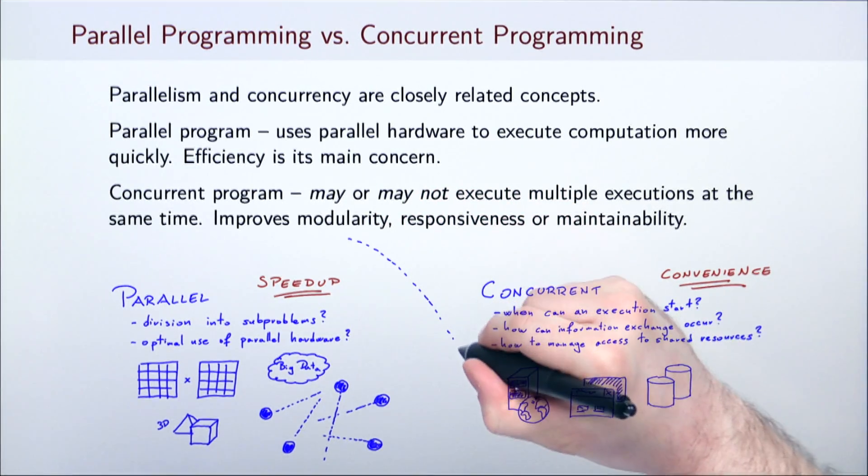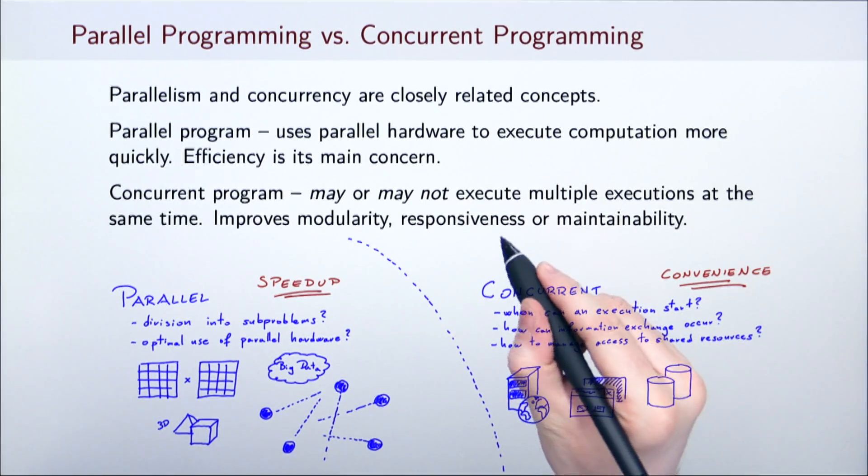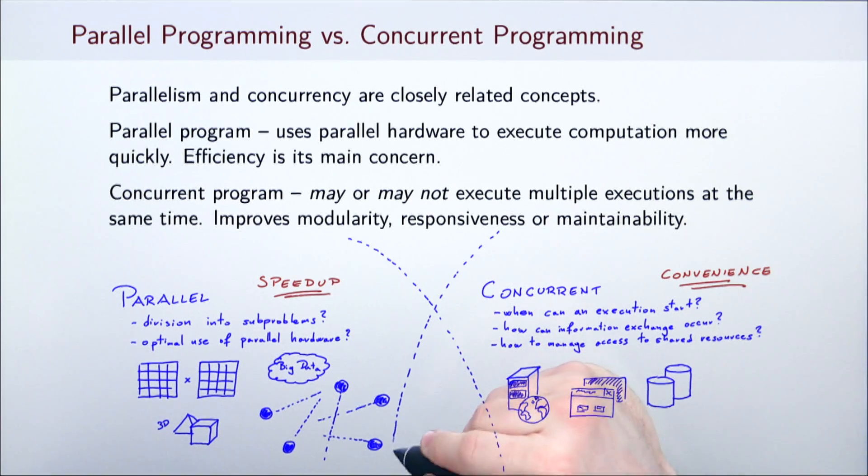The two disciplines often overlap. Parallel programming may rely on insights from concurrent programming, and vice versa. Concurrent programming may be used to solve parallel programming problems. However, neither discipline is the superset of the other.